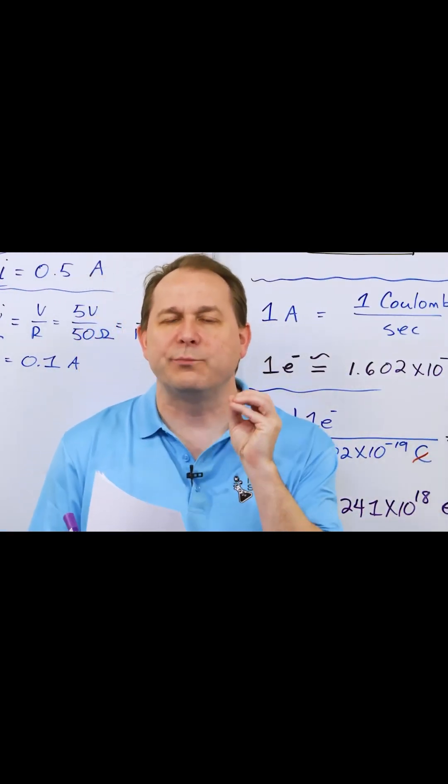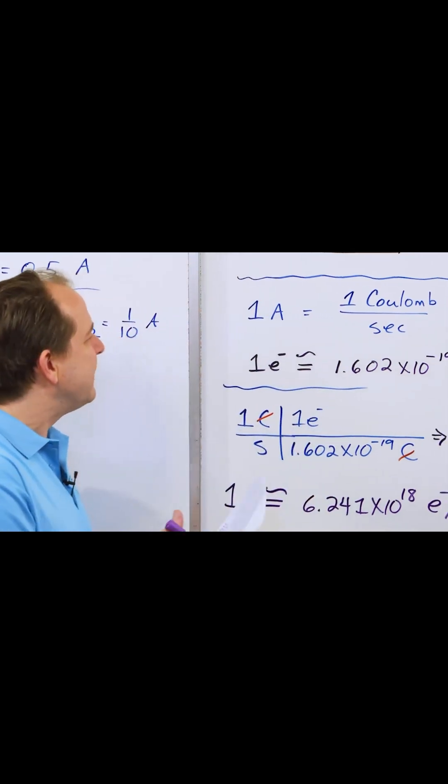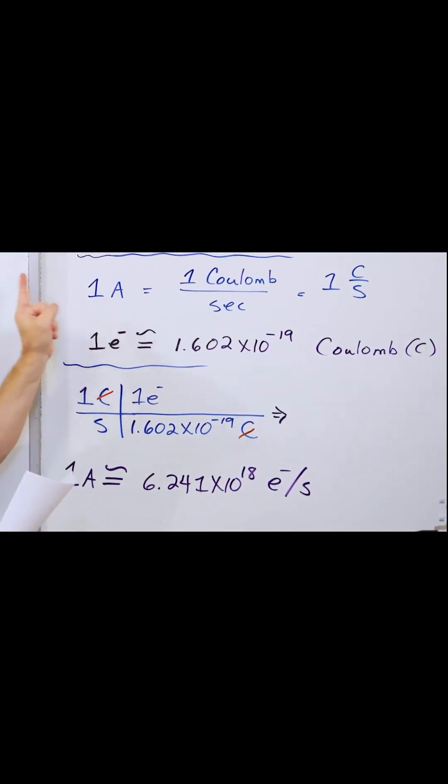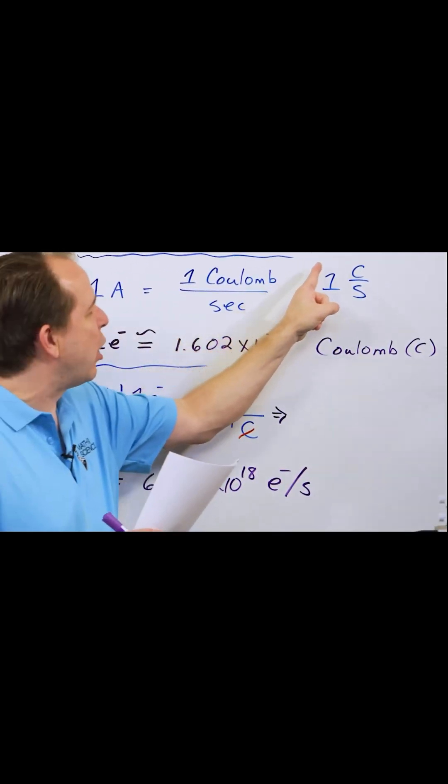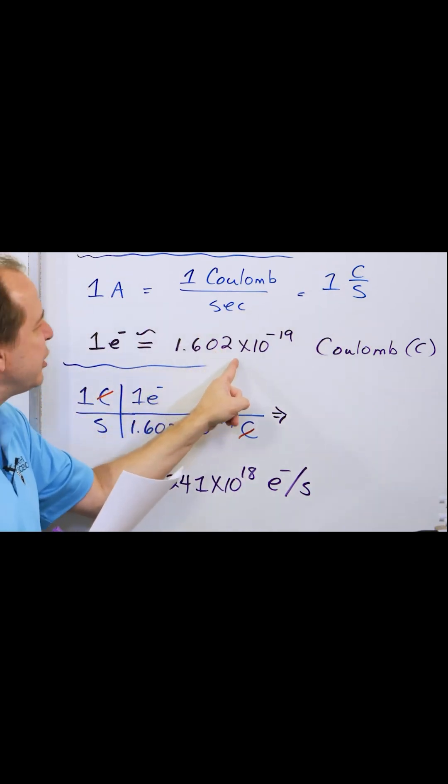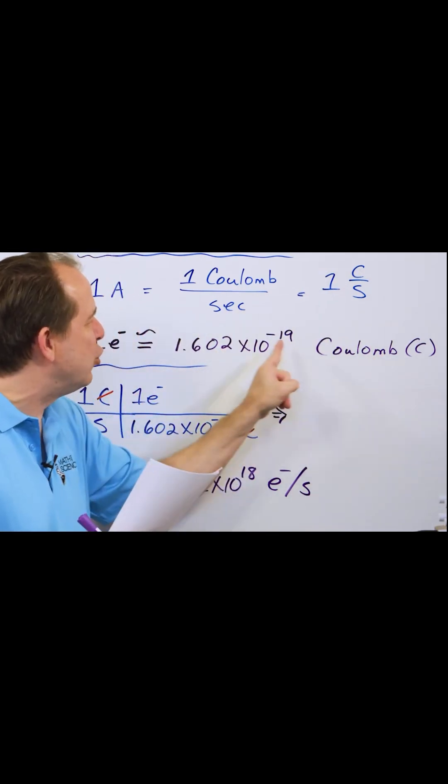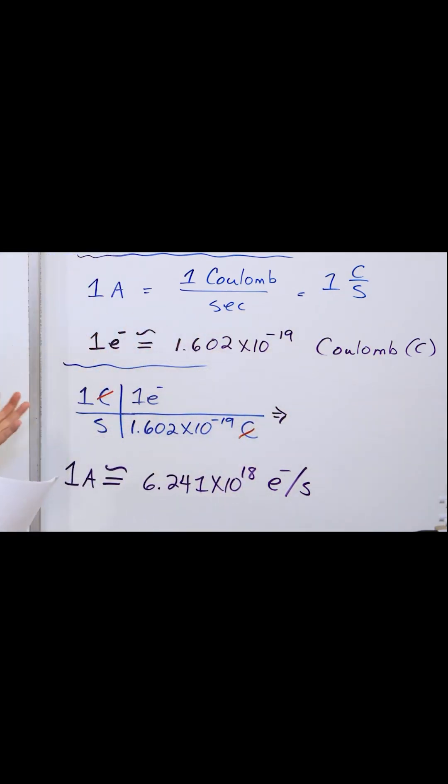This is the connection point that allows you to understand that. Because I'm telling you that an amp here, one amp that you're seeing on the meter, is equal to what we call one coulomb per second. And then I'm telling you a tiny little amount of coulombs - one electron is a tiny fraction of a coulomb.